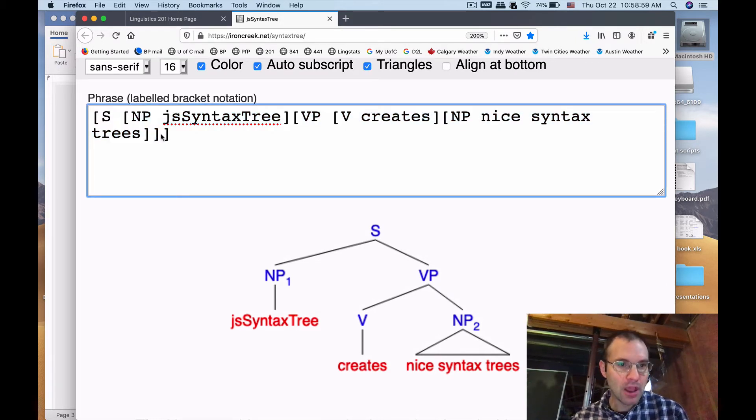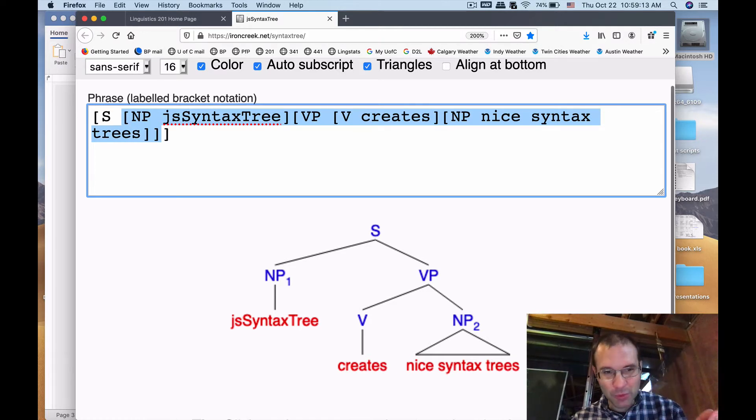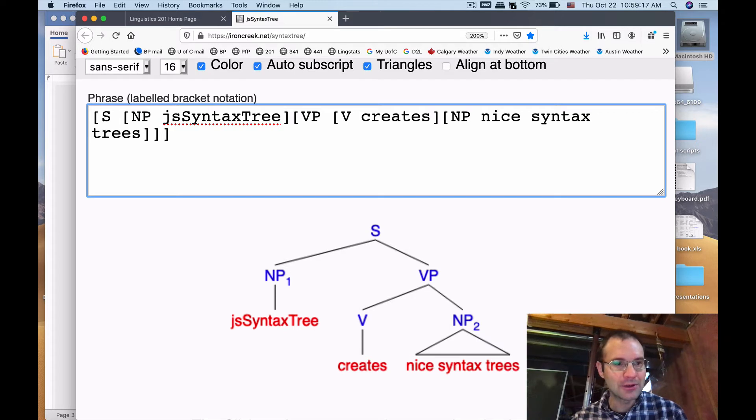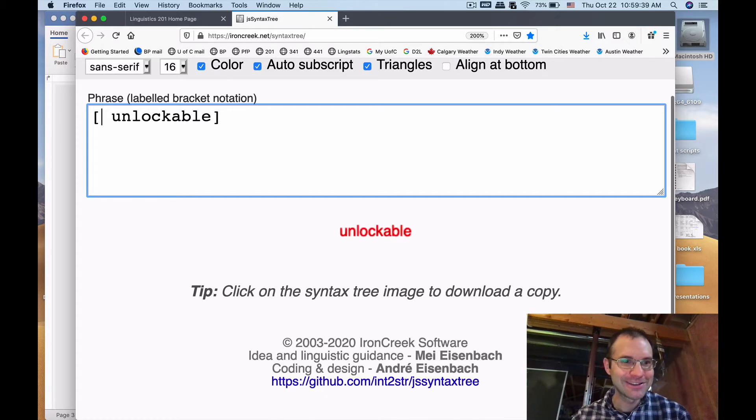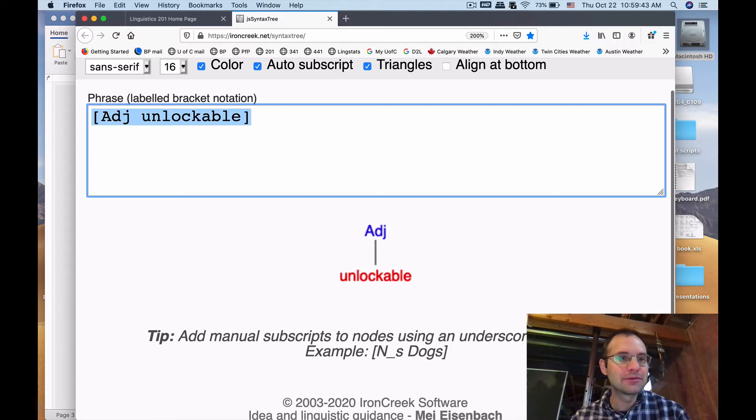I wanted to use this as an example for drawing morphology word trees for that ambiguous term unlockable that we talked about in class. The way this works is that you input code into this bracket notation interface here, and then the online interface translates it into a tree which looks relatively nice and is easy to save and insert into a word document.